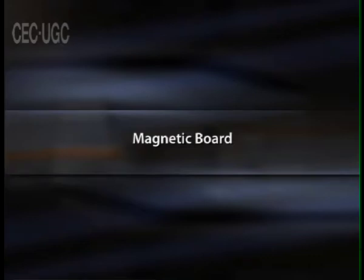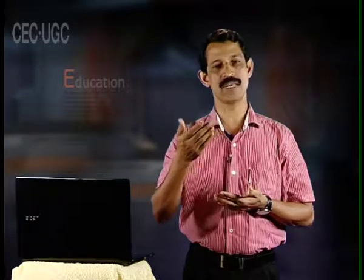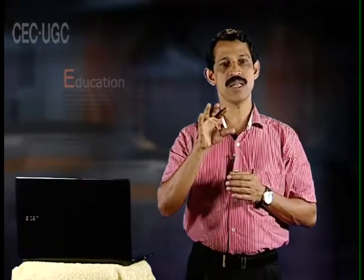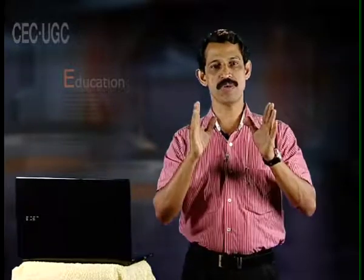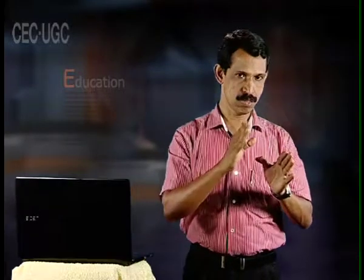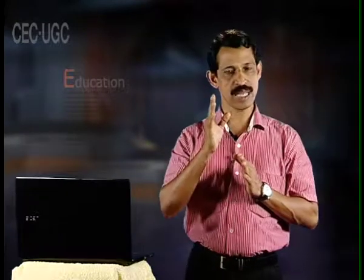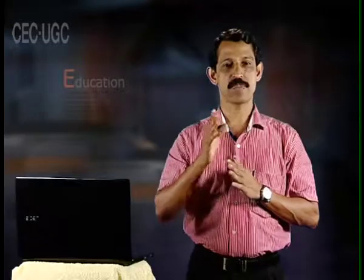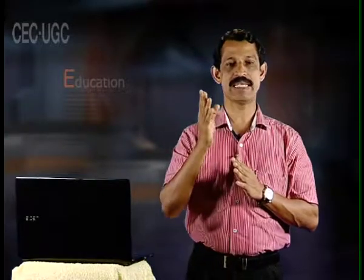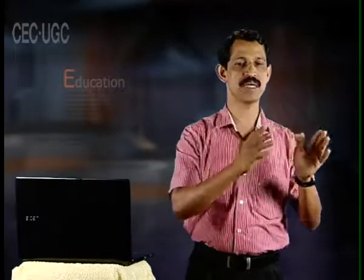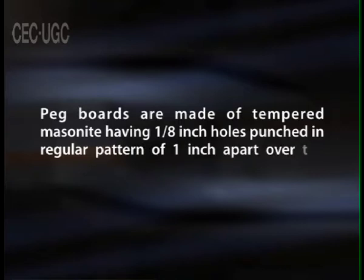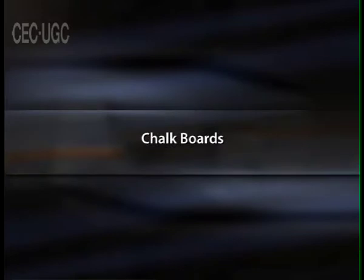The magnetic board is similar in uses to the flannel board. Small magnets are attached to objects, pictures, maps, cutouts and other items to hold them to the thin iron sheeting used to make the board. The magnetic board is used primarily to demonstrate key concepts, although it may occasionally be used as a bulletin board. Some schools have installed magnetic chalk boards which serve the same purpose. Peg boards can be used for combining flat and three-dimensional materials, the latter being supported by specially made hooks and clips. Displays can also be positioned at desired places by pegs. Peg boards are made of tempered masonite having 1 by 8 inch holes punched in a regular pattern 1 inch apart over the entire surface.